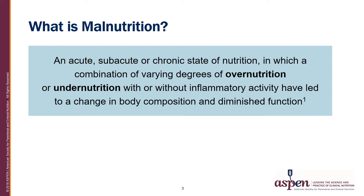It is important to identify malnutrition in adult patients, but before we can talk about malnutrition, it needs to be defined. Malnutrition is an acute, subacute, or chronic state of nutrition in which a combination of varying degrees of overnutrition or undernutrition, with or without inflammatory activity, have led to a change in body composition and diminished function.